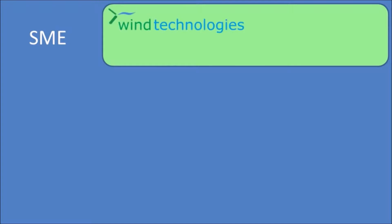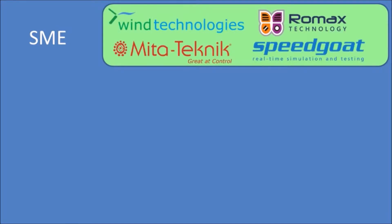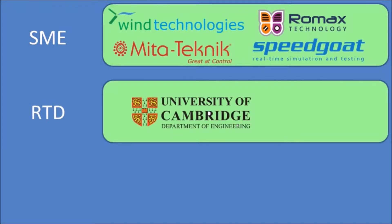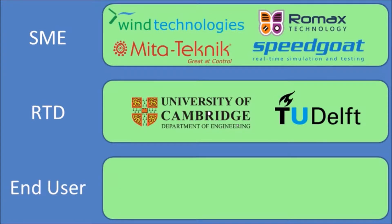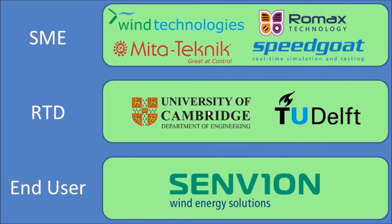There are four small and medium size enterprises, namely Wind Technologies, Romax Technologies, Meter Technique, and Speed Goat. There are two research partners, Cambridge University and Delft Technical University, and we have a potential end user of the technology, Senvion, which is part of Suzlon Energy.